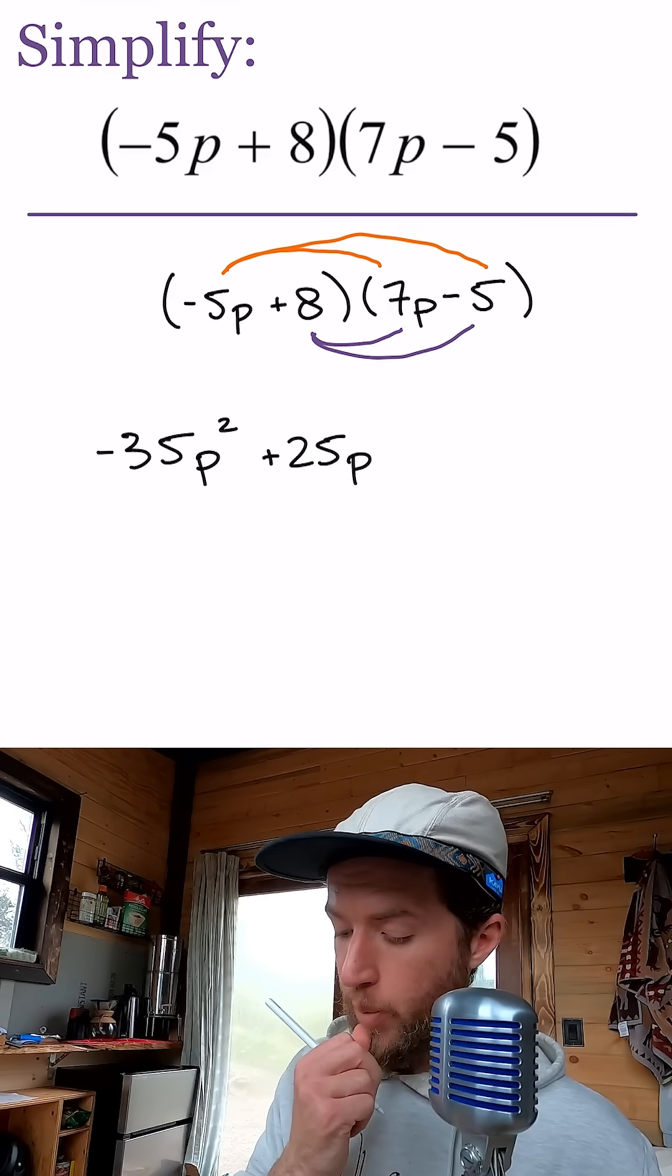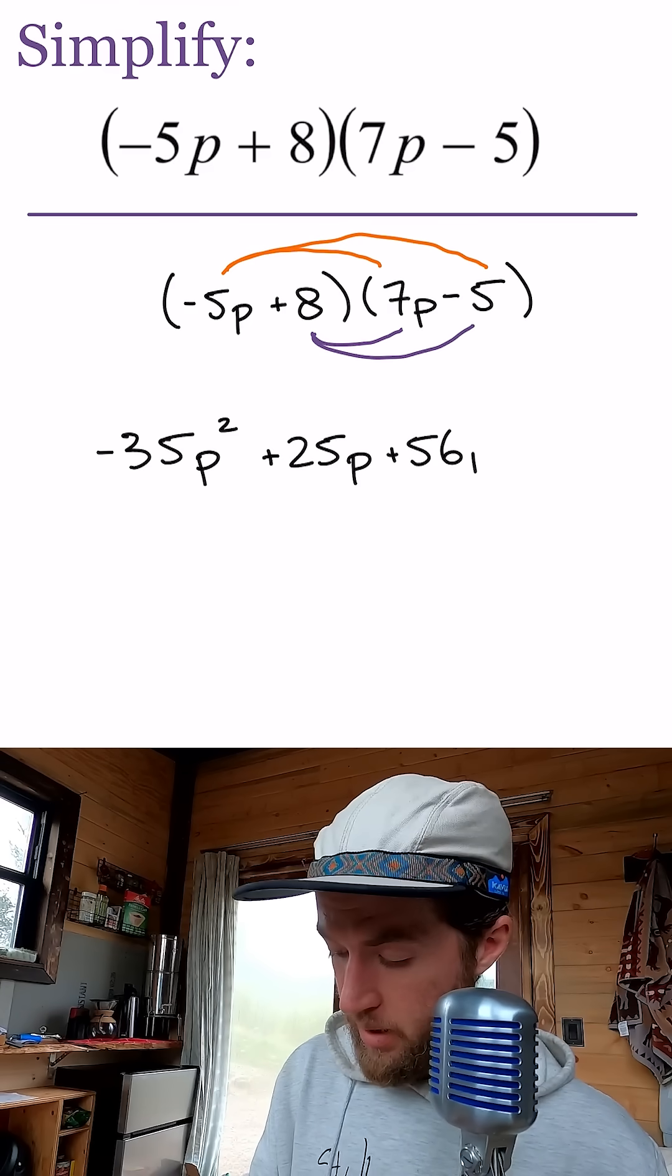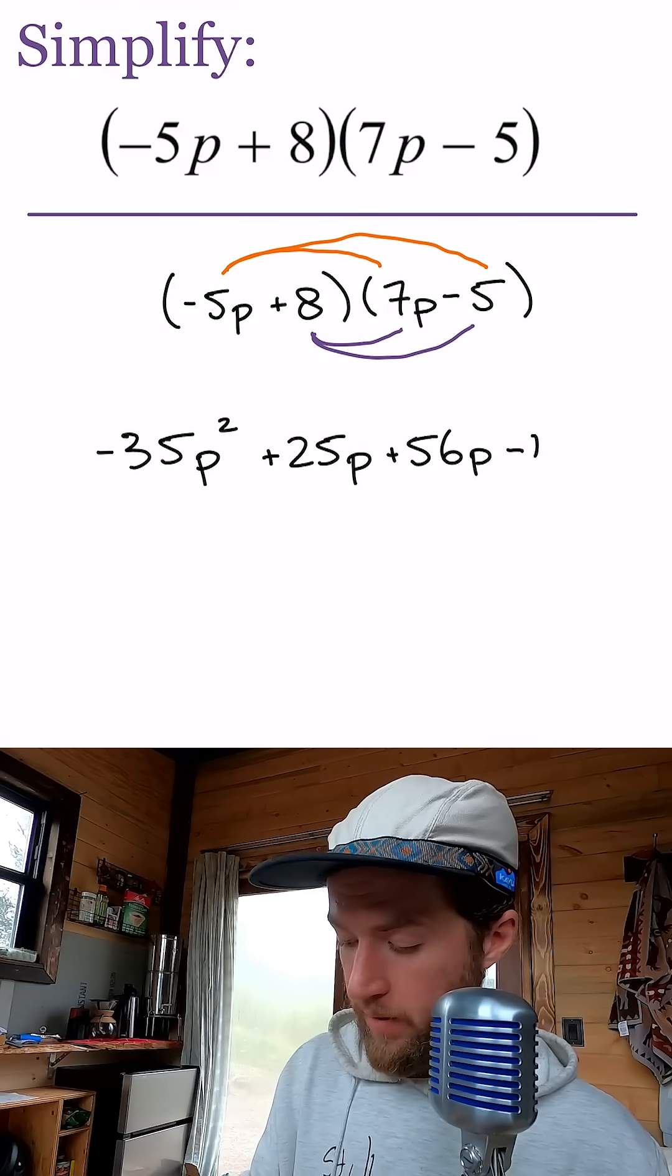Now for purple, 8 times 7p is 56p, and 8 times negative 5 is negative 40.